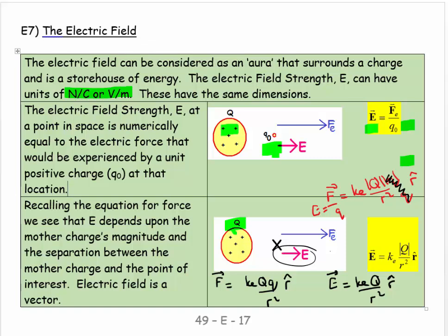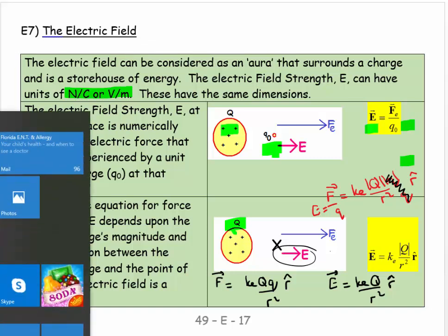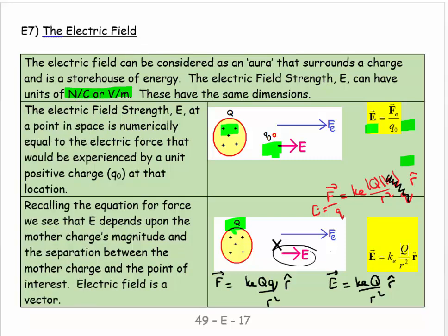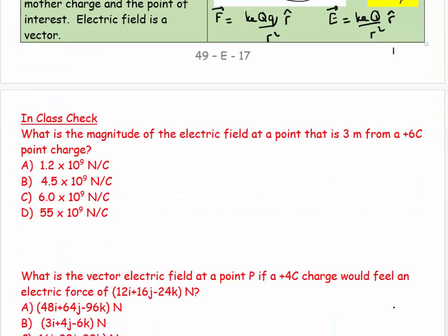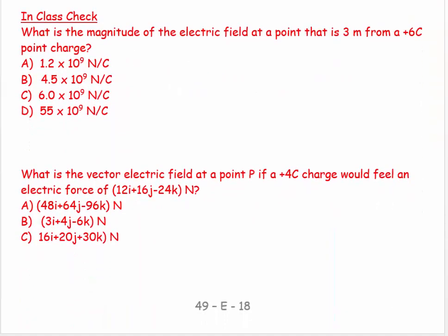So visualization becomes very important. Let's do a couple of examples. So what's the magnitude of an electric field at the point 3 meters from a 6 Coulomb positive charge? So we have plus 6. There's my mother charge. And it doesn't matter the directions. I'm just going to say 3 meters over there.